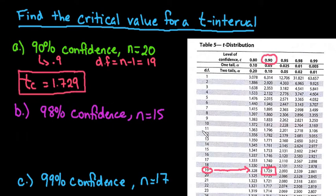Let's look at the next one. Our next one is 98% confidence, so this time we would do 98% confidence, which is 0.98, and our degrees of freedom would end up being 15 minus 1, which is 14.